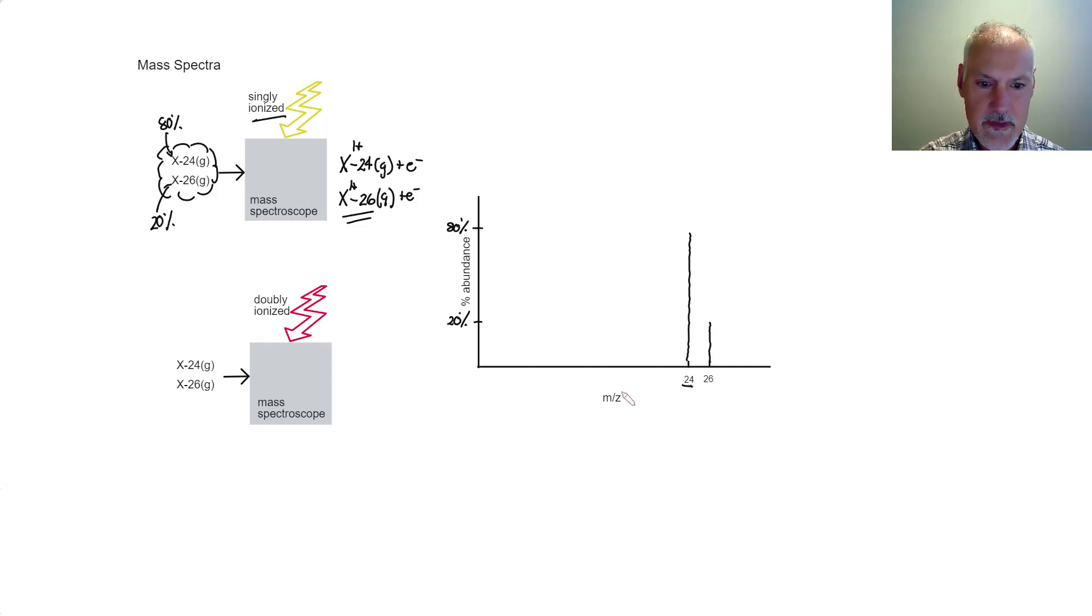Now, this axis, M over Z, refers to mass divided by charge. And in the case of my singly ionized material, the charge is one plus. That's why these numbers can be used here, because essentially I'm just dividing them by one.